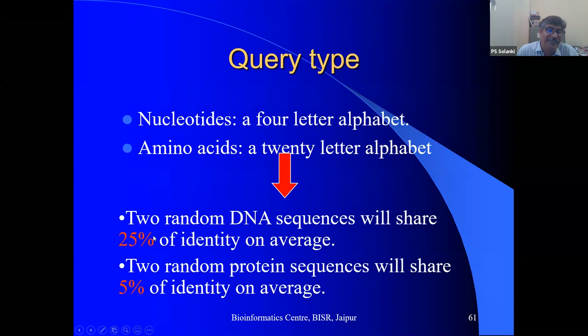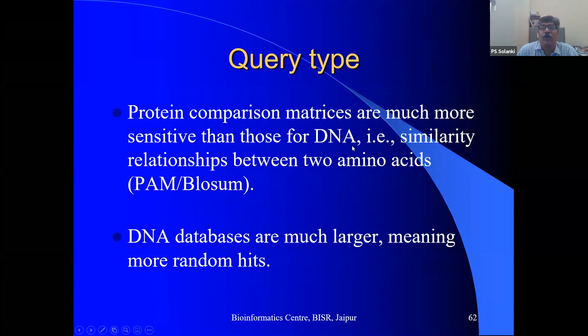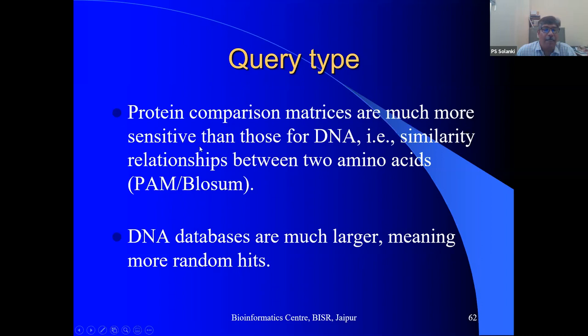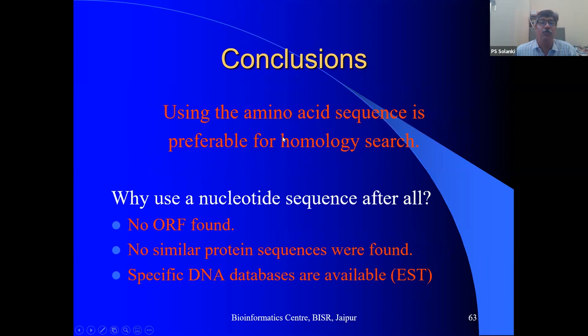BLOSUM and PAM scoring matrices are available for protein-based database comparisons — not for DNA. Protein comparisons are much more sensitive than DNA comparisons because nucleotide sequences have only four bases (25% random identity between two random DNA sequences), while amino acid sequences have 20 residues (only 5% random identity). That is why using amino acid sequences is preferable for homology searching. If no ORF is present, nucleotide sequence searching may be necessary — for example, EST searching.